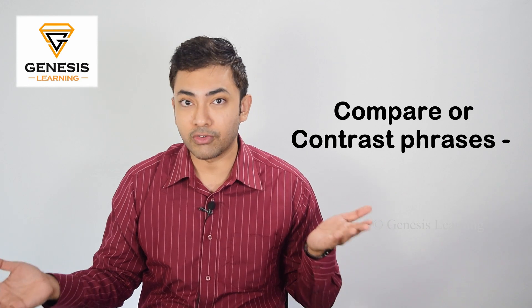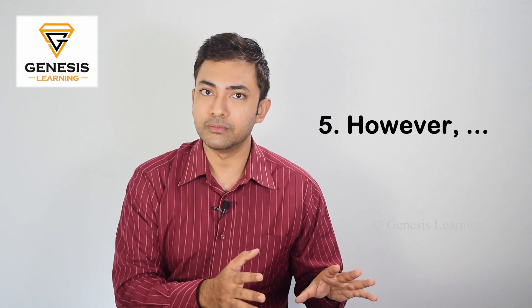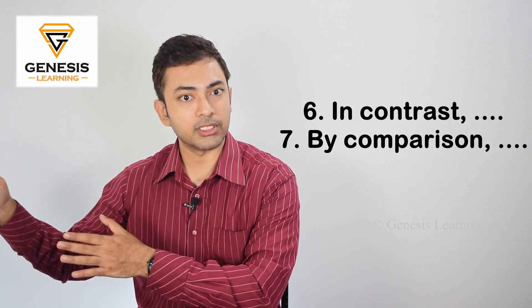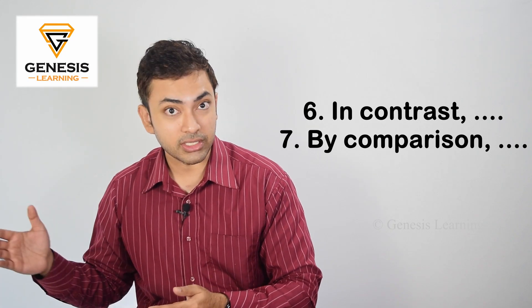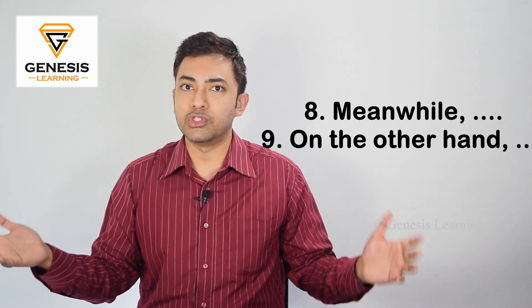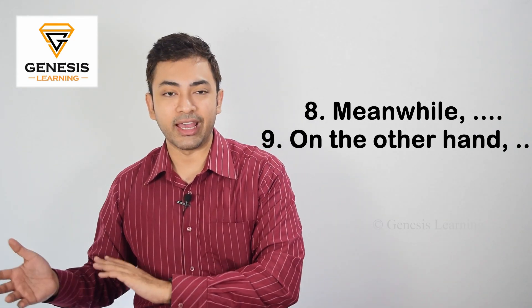Suppose you want to do some comparison. You want to compare or contrast two different ideas. Then you can use different words like however, in contrast, by comparison. One example sentence you can use is, however, he is also a very talented football player. So you can use these phrases like however, in contrast, by comparison, meanwhile, and the most famous and easiest one, on the other hand. Any of these can be used to compare and contrast ideas.